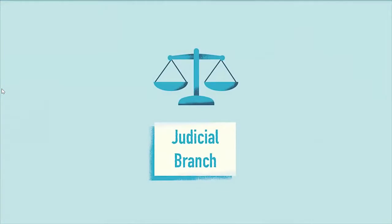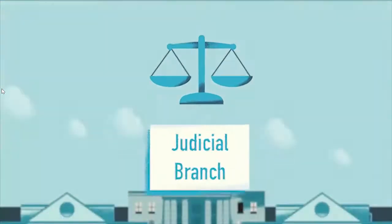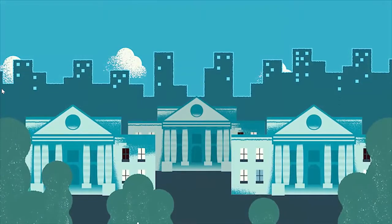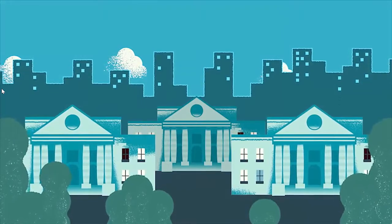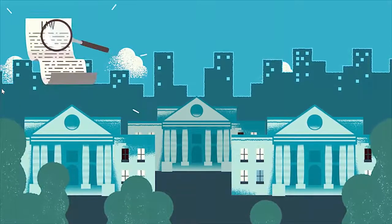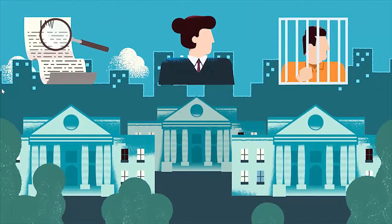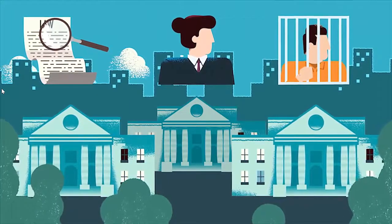Lastly, there's the judicial branch, which is a group of independent courts that act separately from the other two branches. It is their responsibility to interpret and enforce laws, to protect citizens and discipline offenders.